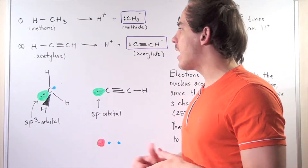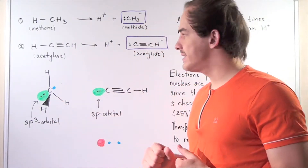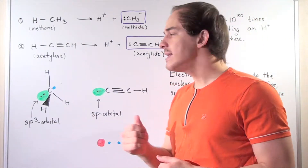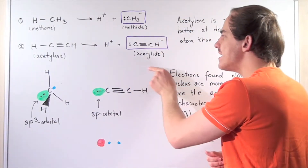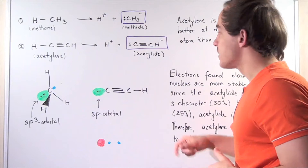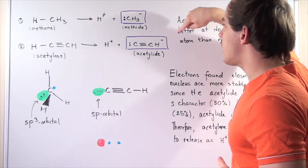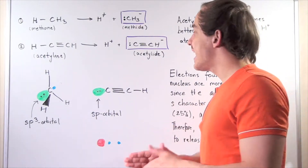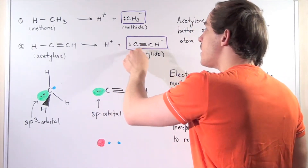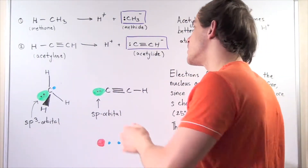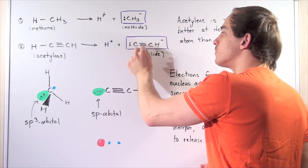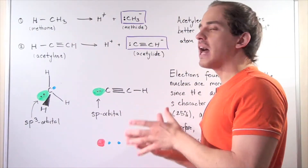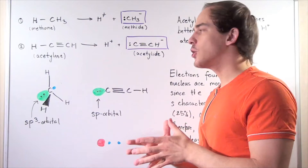In reaction 2, acetylene dissociates into an H⁺ atom and also creates an anion called acetylide. This acetylide also has a net charge of negative 1 because it has a lone pair of non-bonding electrons on the first carbon.